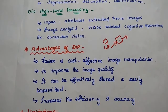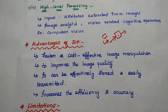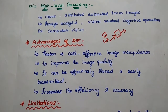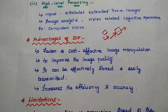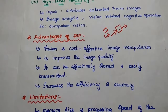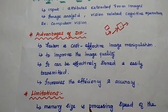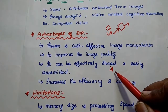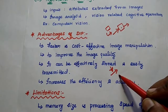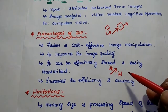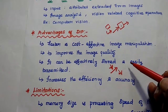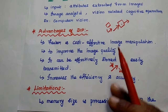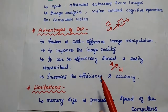Next, advantages of digital image processing. We can have faster and cost-effective image manipulations, improve image quality, effectively store and easily transmit images from one place to another. Digital images can be stored easily compared with analog images. We can easily compress digital images and store them within a storage area, and uncompress the signal whenever needed. This also increases efficiency and accuracy — these are the various advantages of digital image processing.